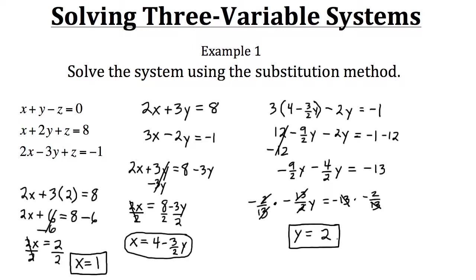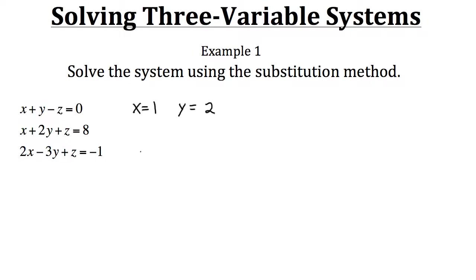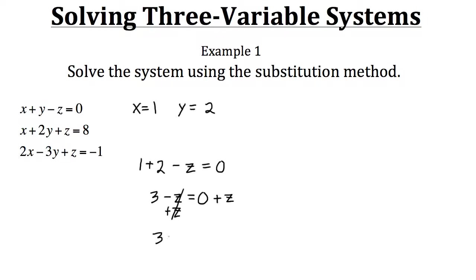Now that we know our x and y values, we plug those into an equation in our original three-variable system to find z. Using the top equation with x equals one and y equals two: one plus two minus z equals zero. One plus two is three, so three minus z equals zero. Adding z to both sides gives us z equals three. So the solution to this three-variable system is x equals one, y equals two, and z equals three.